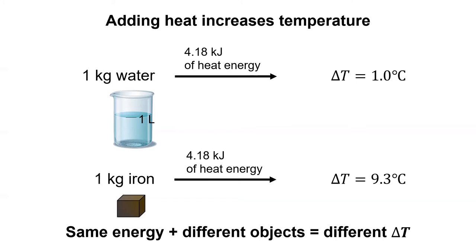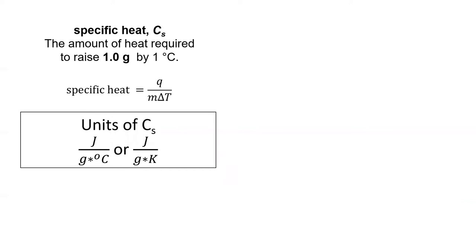We symbolize the amount of temperature change as delta t. Each material in the universe has a value called its specific heat, abbreviated as c sub s. The specific heat is the amount of heat energy needed to raise the temperature of one gram of the substance by one degree Celsius. The units are joules per gram degree Celsius. You may recall that one degree Celsius is the same size as one Kelvin, so the units are also often written as joules per gram Kelvin.